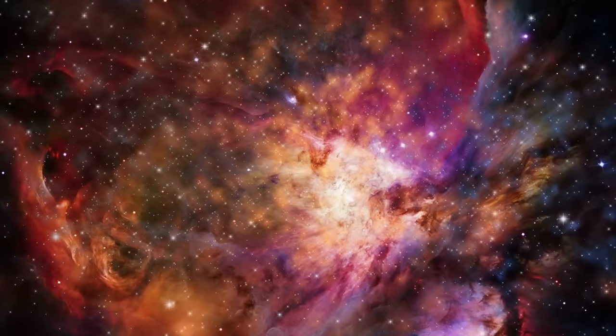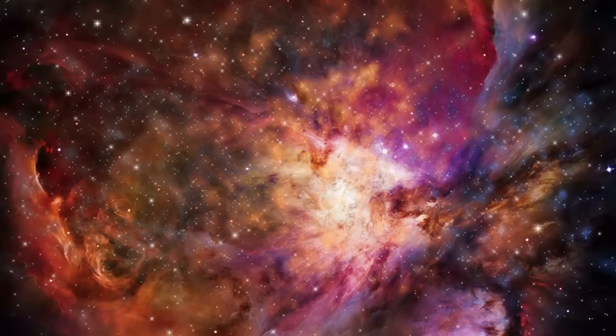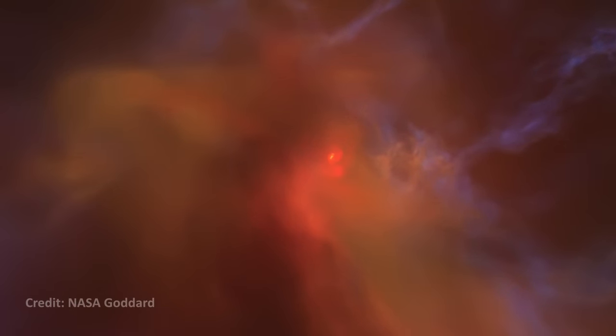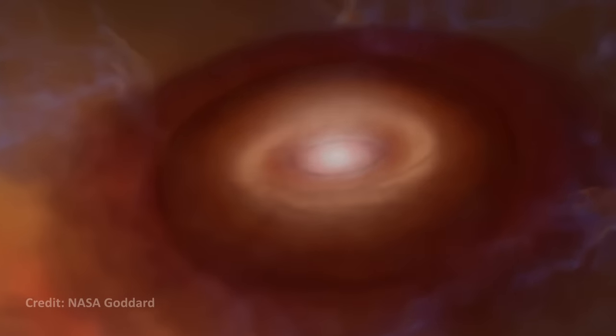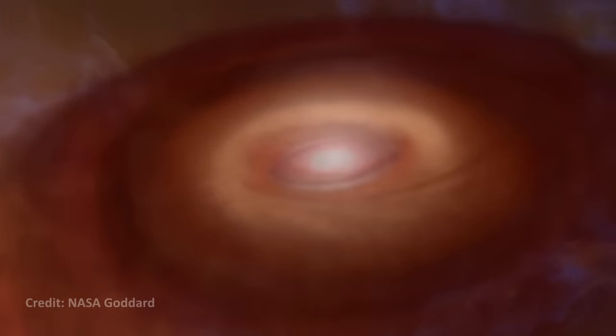Gravitational forces cause these clouds to condense and contract, increasing the density and temperature of their cores. As the cloud continues to contract, it forms a dense, hot core called a protostar.